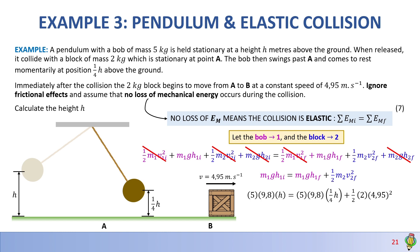Substituting values: mass of bob is 5 kg, initial height is h. This equals mass of bob 5 times g times one quarter h, plus half of mass of block 2 kg, multiplied by final velocity squared of 4.95 m/s. After substitution we have only one unknown — h. Solving gives h = 0.67 meters. That is the final answer for this question, worth 7 marks.